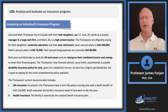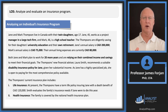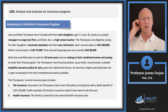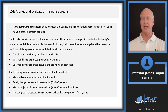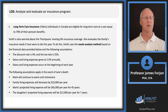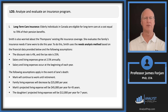They both plan to work for 20 more years — they're both in their mid-40s — relying on their combined income and savings to meet their financial goals. Since Jane makes substantially more than Mark, she's probably in line for more life insurance. The financial advisor, Laura Smith, recommends a suitable disability insurance policy for Jane given her substantial income and highly specialized job. Currently, they insure Jane with a death benefit of $120,000 Canadian dollars. They're covered by a national health insurance plan, and they're eligible for long-term care at a cost equal to 70% of their pension benefits.